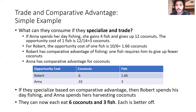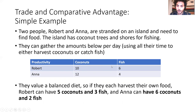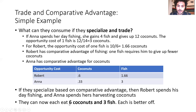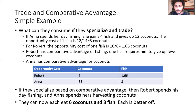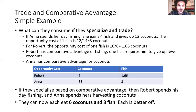So based on comparative advantage, Robert spends his day fishing and Anna harvests coconuts. They'll end up with 6 fish and 12 coconuts total. Splitting those equally, they each have 6 coconuts and 3 fish. Before, Robert had 5 coconuts and 3 fish—now he's better off by one coconut. Anna had 6 coconuts and 2 fish—now she's better off by one fish. By specializing and trading based on comparative advantage, they're both better off—there's a gain from trade.